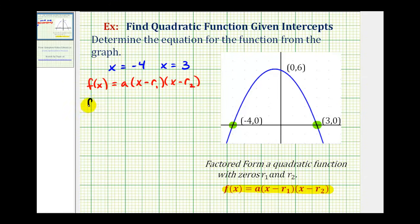So this would give us f of x equals a times x minus negative four, which becomes x plus four, times x minus three.